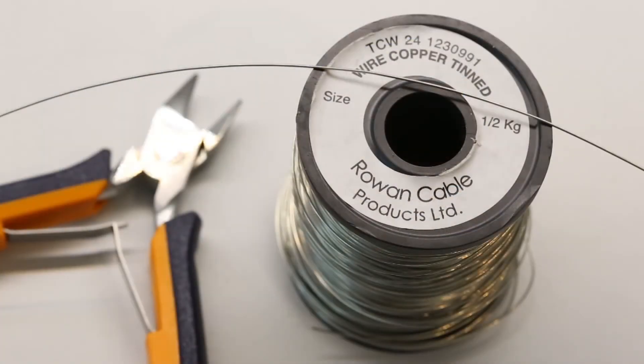All the vias are drilled with a diameter of 0.6mm. I then use this tinned copper wire also with a diameter of 0.6mm. I take short pieces of it and just stick them through those holes.